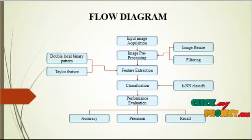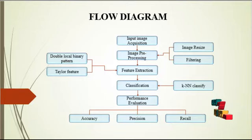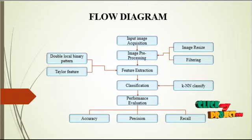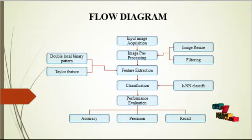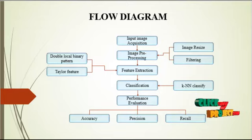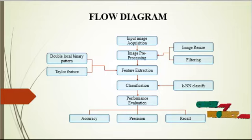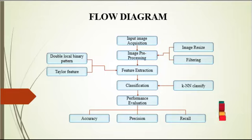Let's see the flow diagram of our project. These are the major steps to be performed in the facial expression recognition system. The first step is input image acquisition, where we get the input image from our collected dataset. The dataset consists of different expression images from individual persons, and all images in the dataset are kept for processing.